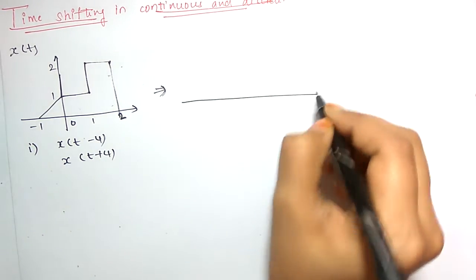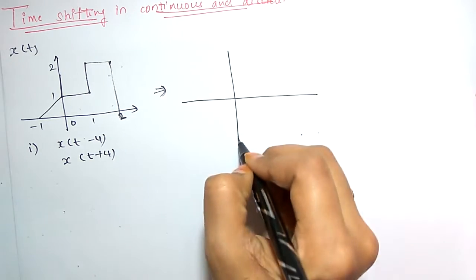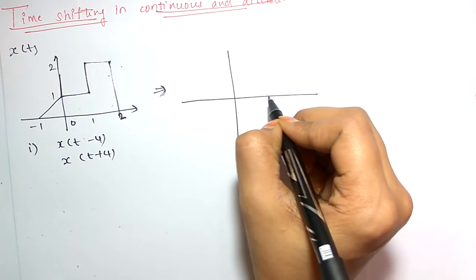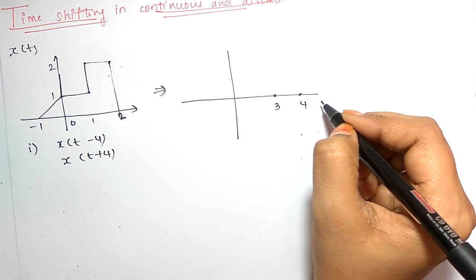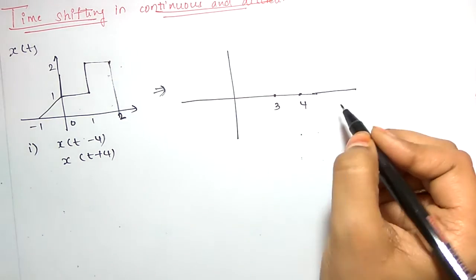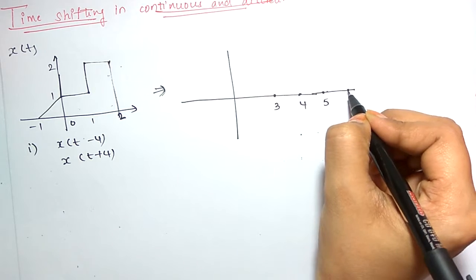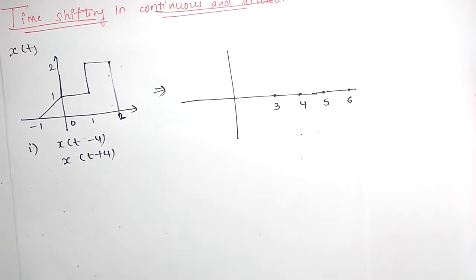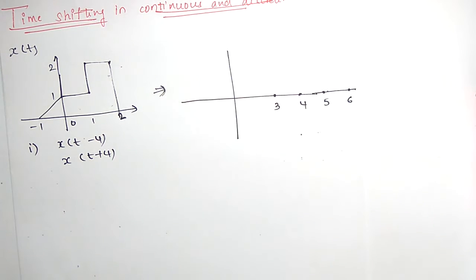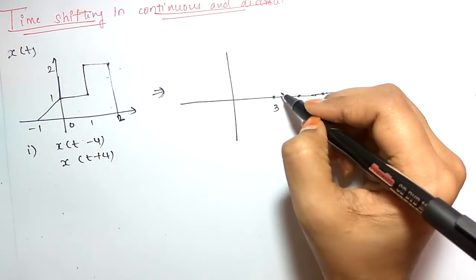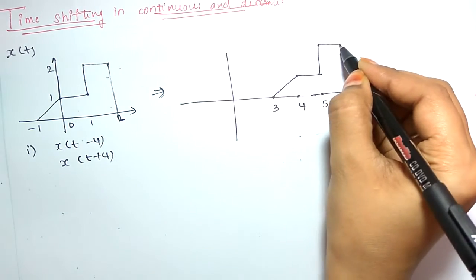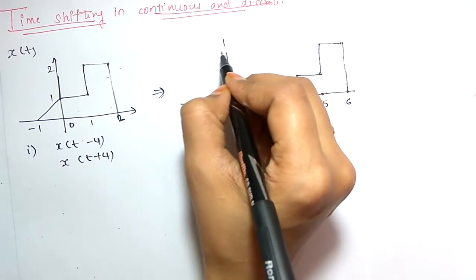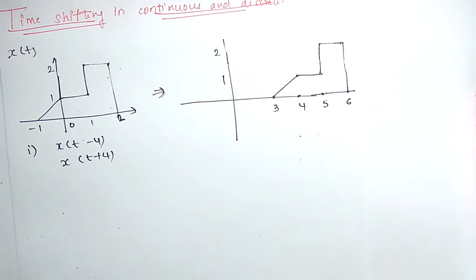So minus 1 plus 4 gives 3, and 0 plus 4 gives 4, and 1 plus 4 gives 5, and 2 plus 4 gives 6. So the new axis runs from 3 to 6. The lower limit minus 1 is shifted to 3 and the upper limit 2 is shifted to 6. The graph shape remains the same — the magnitude does not change; it is still 2 and 1. Only the time axis shifts.